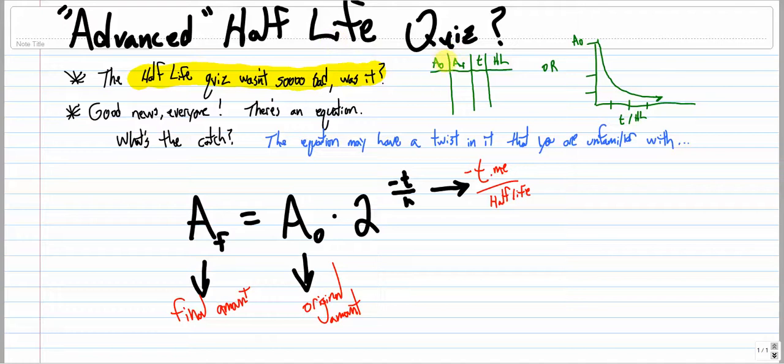Most kids who pass the half-life quiz either draw themselves a table like they learned in the videos, or maybe you drew yourself this decay function graph here and you kept track of your original amount and then half the amount and then a quarter, and each time a half-life went by it was cut down 50% each time. However you passed the half-life quiz, congratulations.